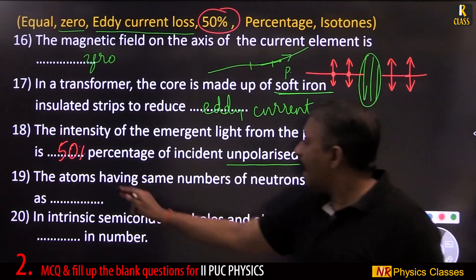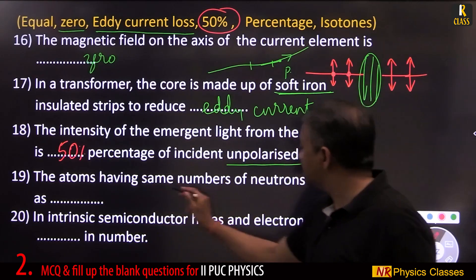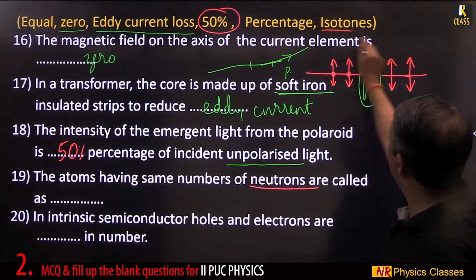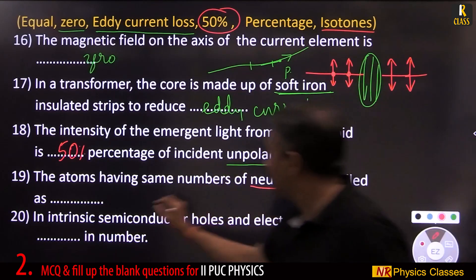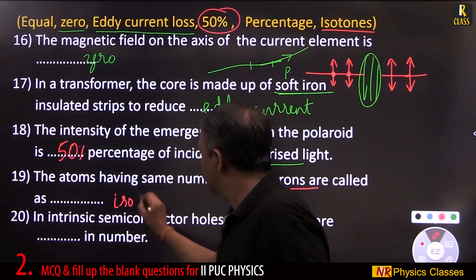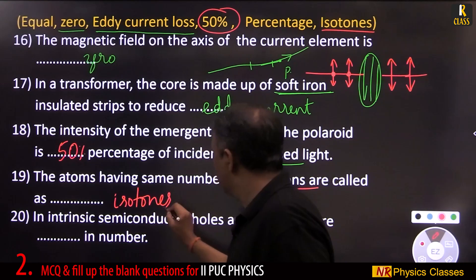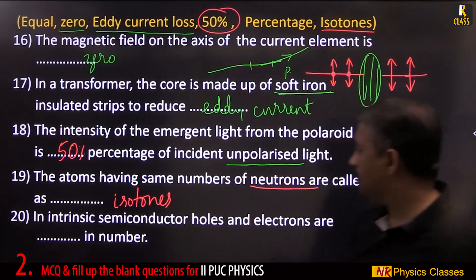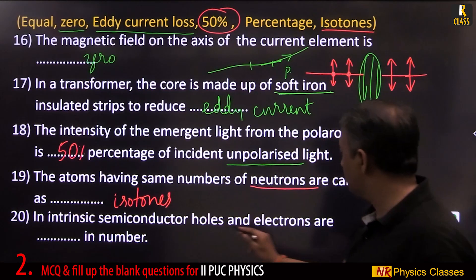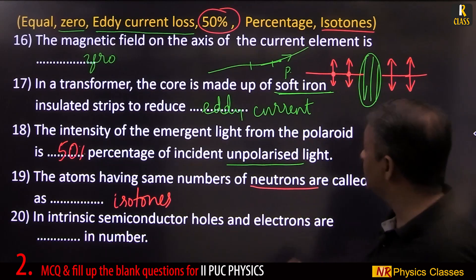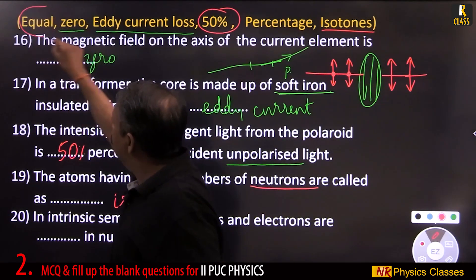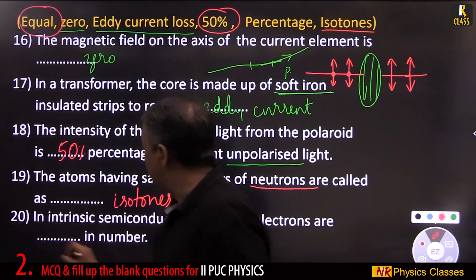Atoms having the same number of neutrons are called isotones. In an intrinsic semiconductor, the number of holes and electrons are equal.